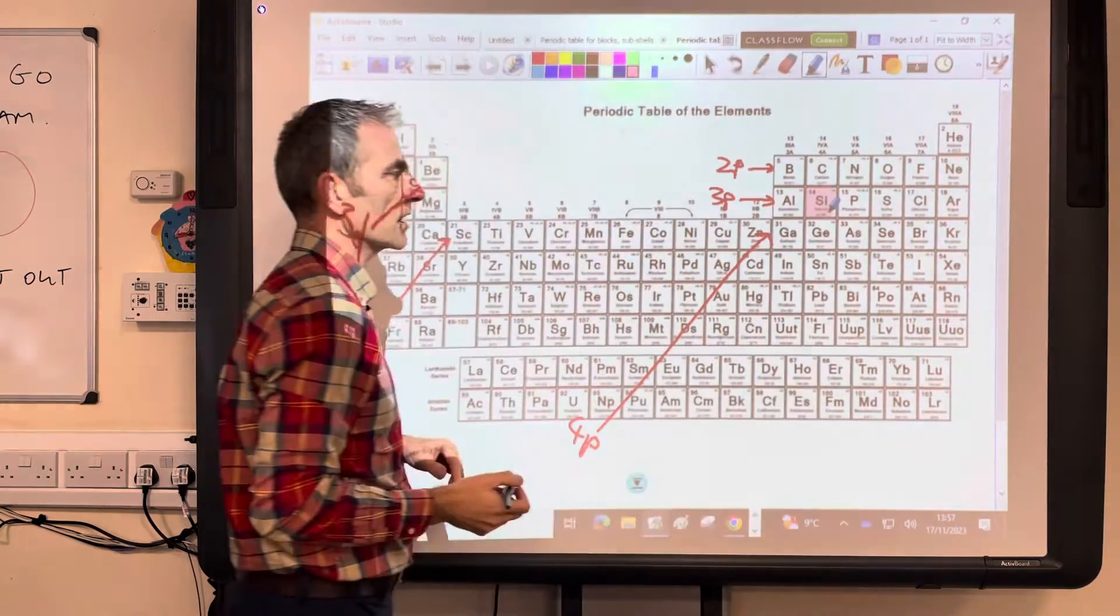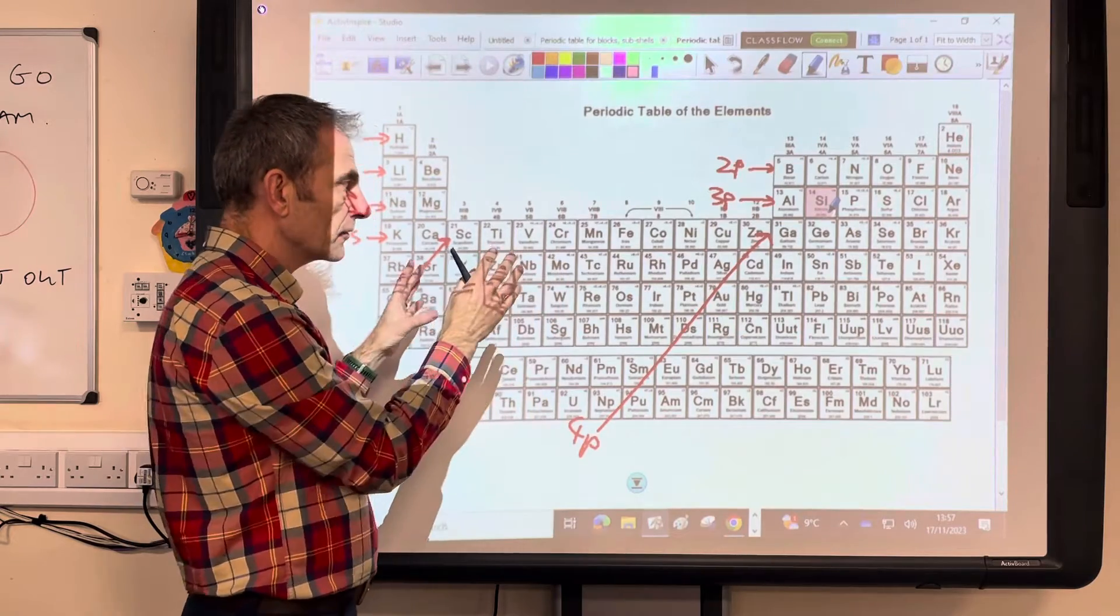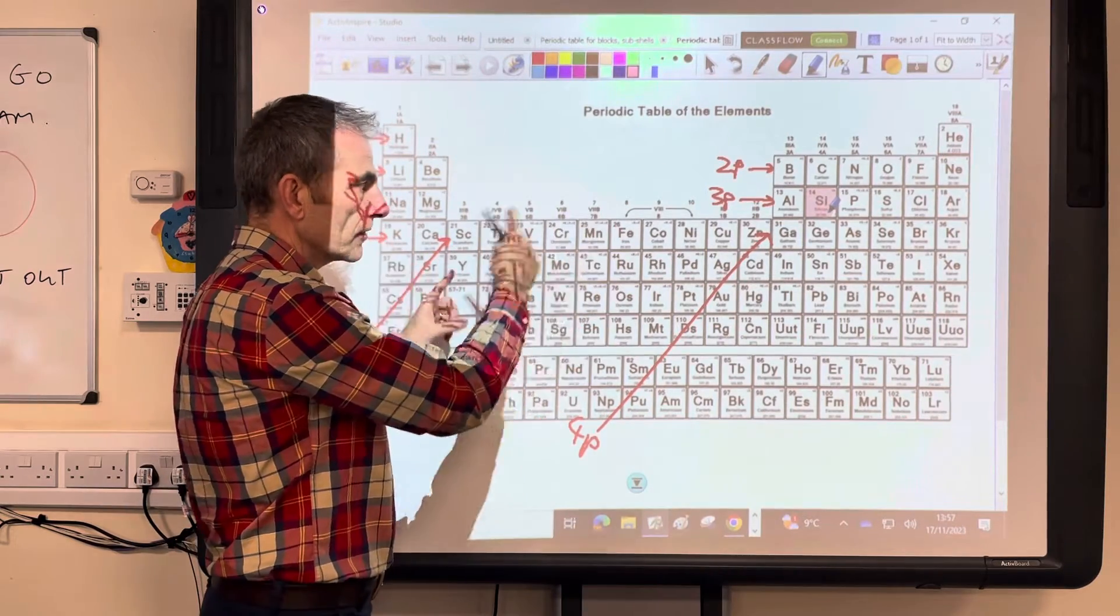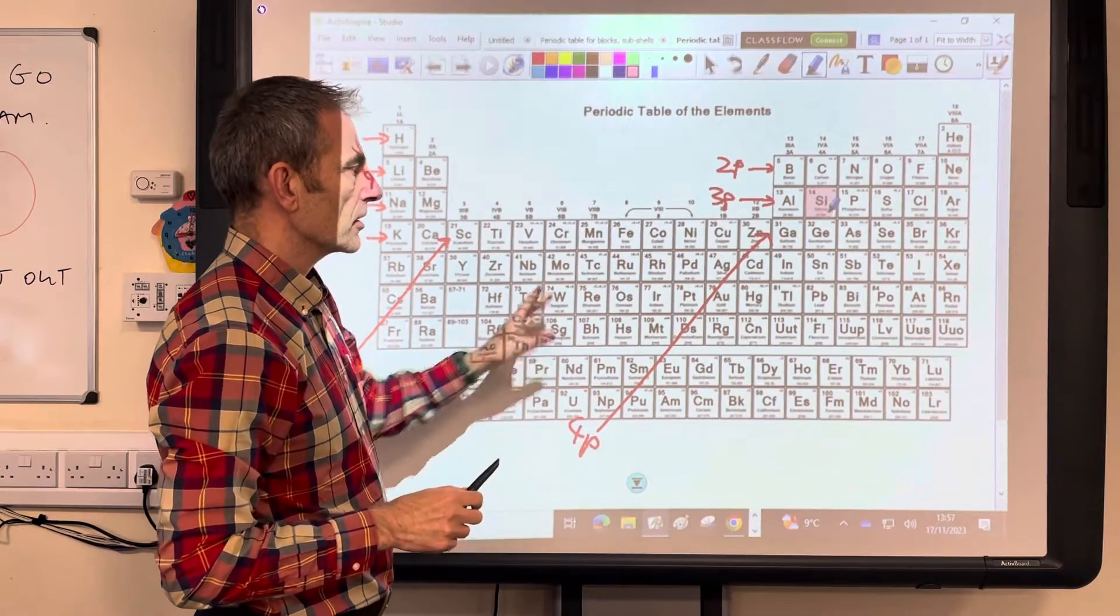Just picking random ones here. Now there are two rogue ones, which I'll deal with at the end. But apart from those two, all of the other 34 elements, you can get their electron configuration nice and easily from the position.